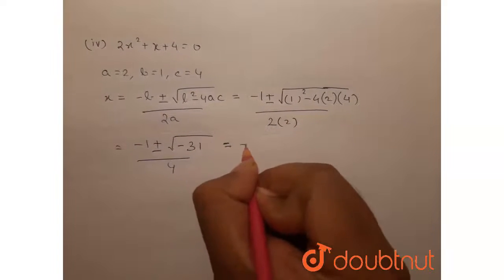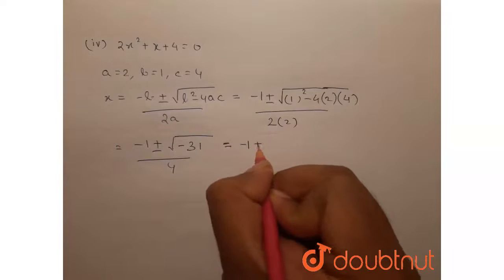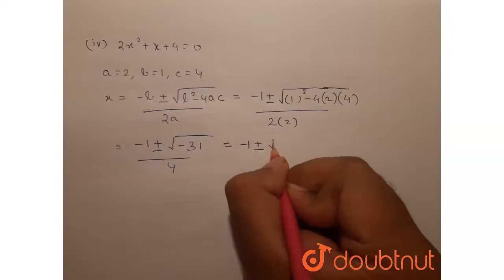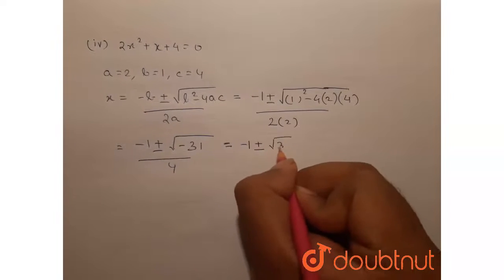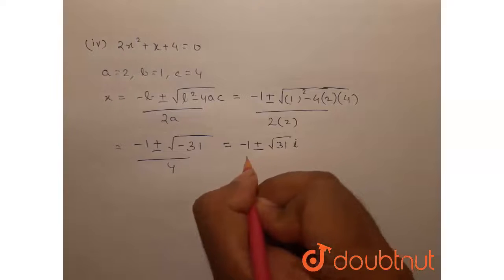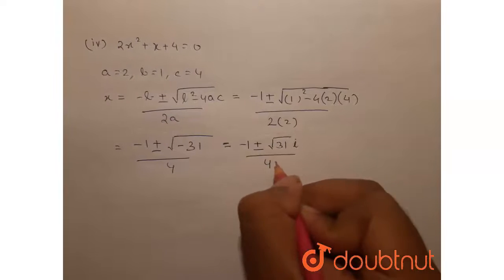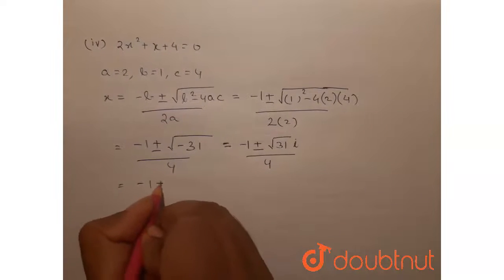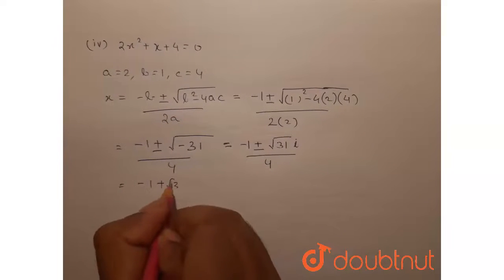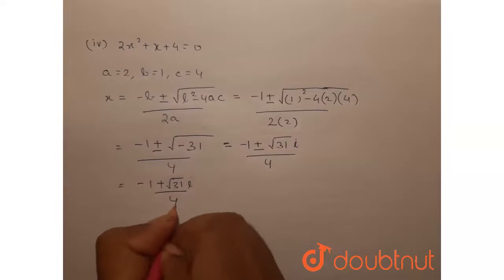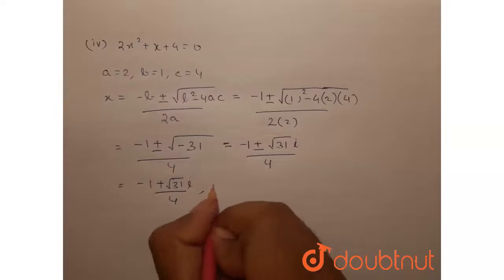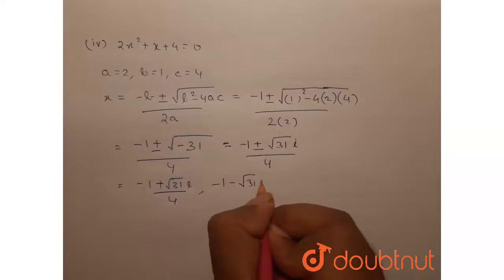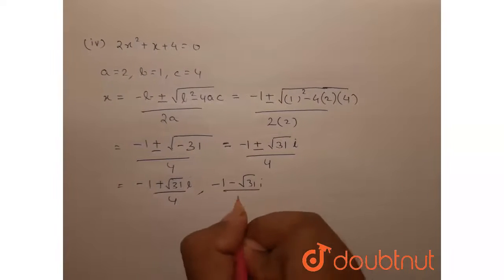So we have unreal roots in this case, which will be minus 1 plus or minus root 31 iota, all by 4. The roots are (minus 1 plus root 31 iota) by 4 and (minus 1 minus root 31 iota) by 4.